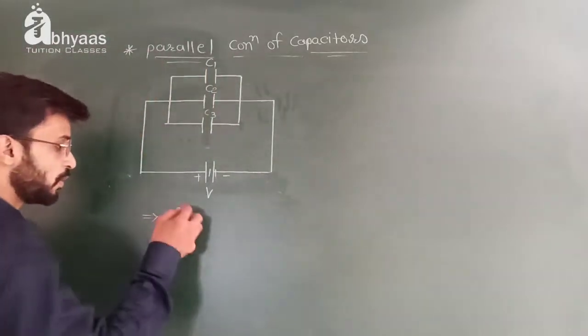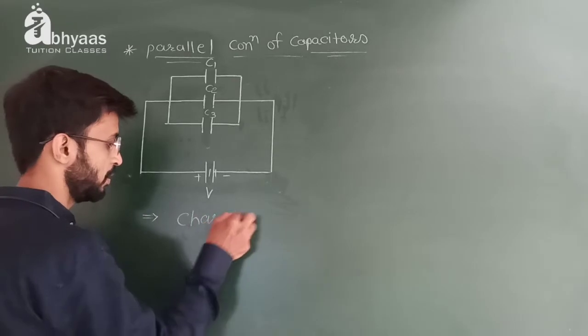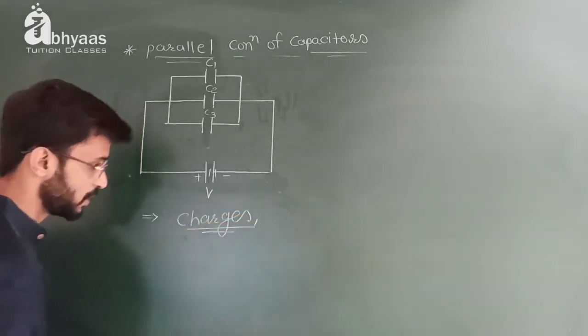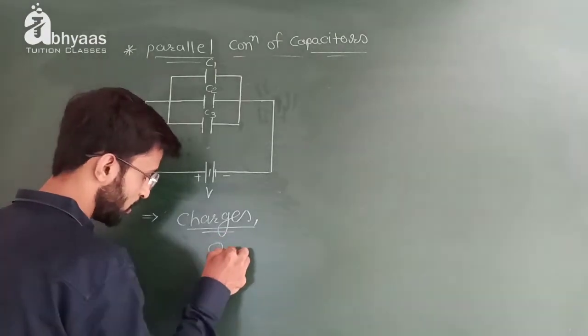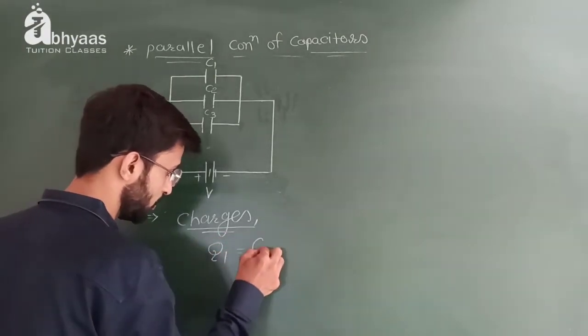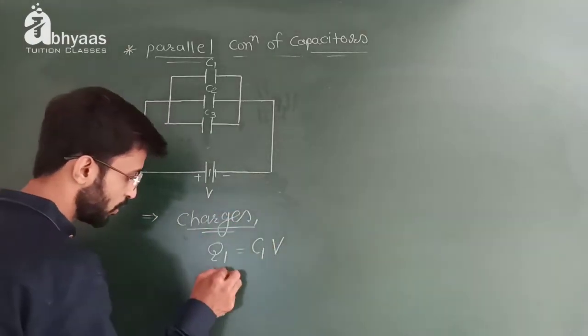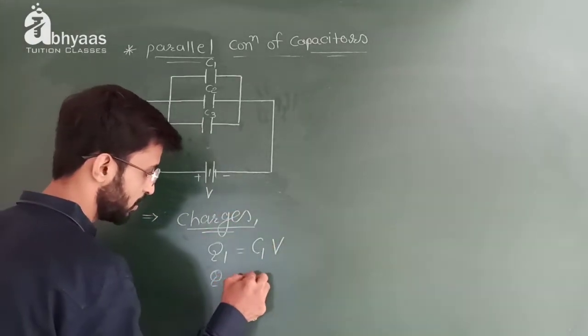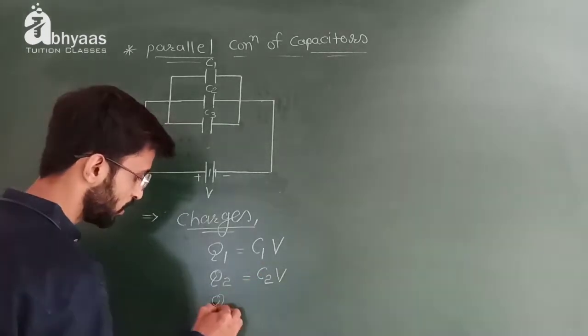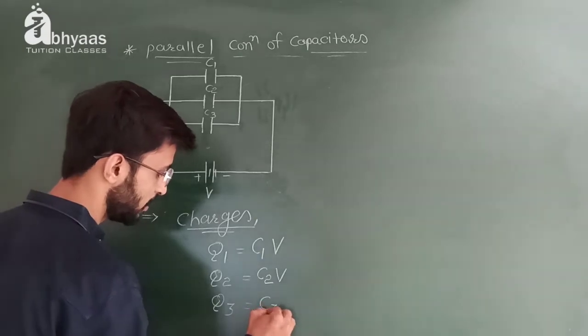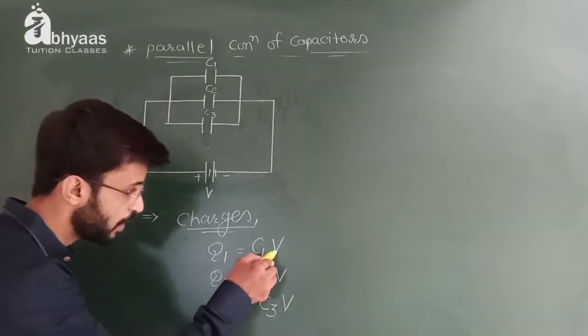First of all, the charges on each capacitor is given by Q1 is equal to C1 into V, Q2 is equal to C2 into V, and Q3 is equal to C3 into V.